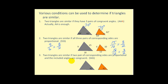Lastly, two triangles are similar if two pairs of corresponding sides are proportional and the included angles are congruent. So if we know this side is 15 and this side is 10, and this side is 18 and this side is 12, those corresponding sides are proportional. Because the angle formed by these two sides is congruent, this guarantees similarity. This is called side-angle-side, or SAS.